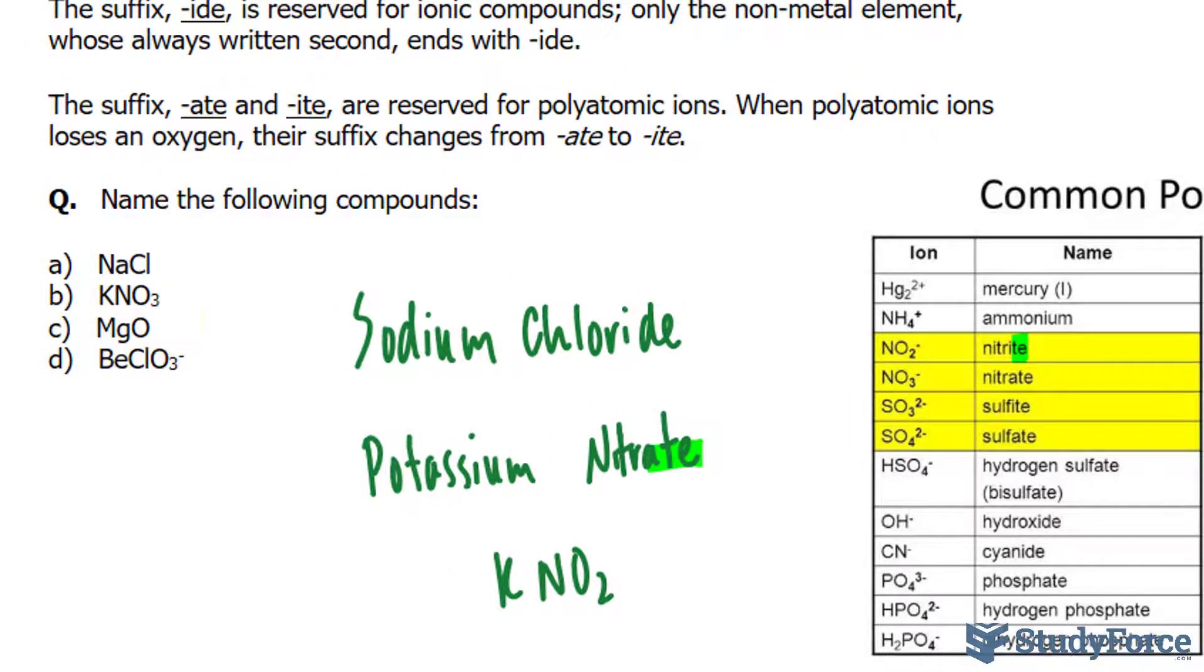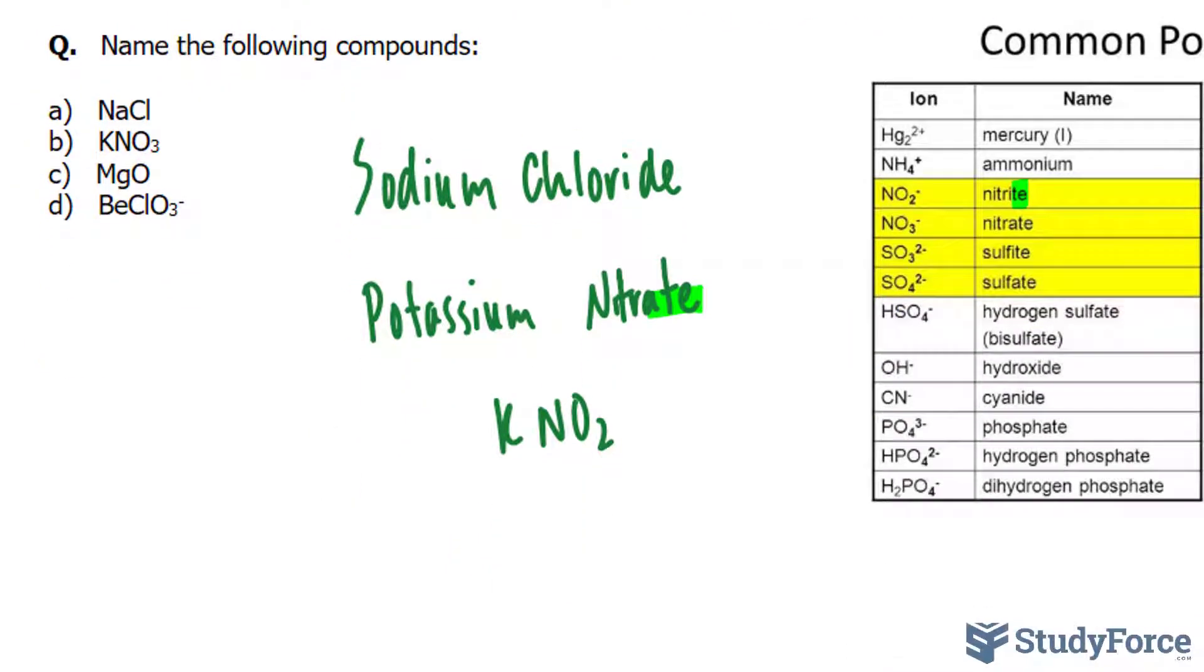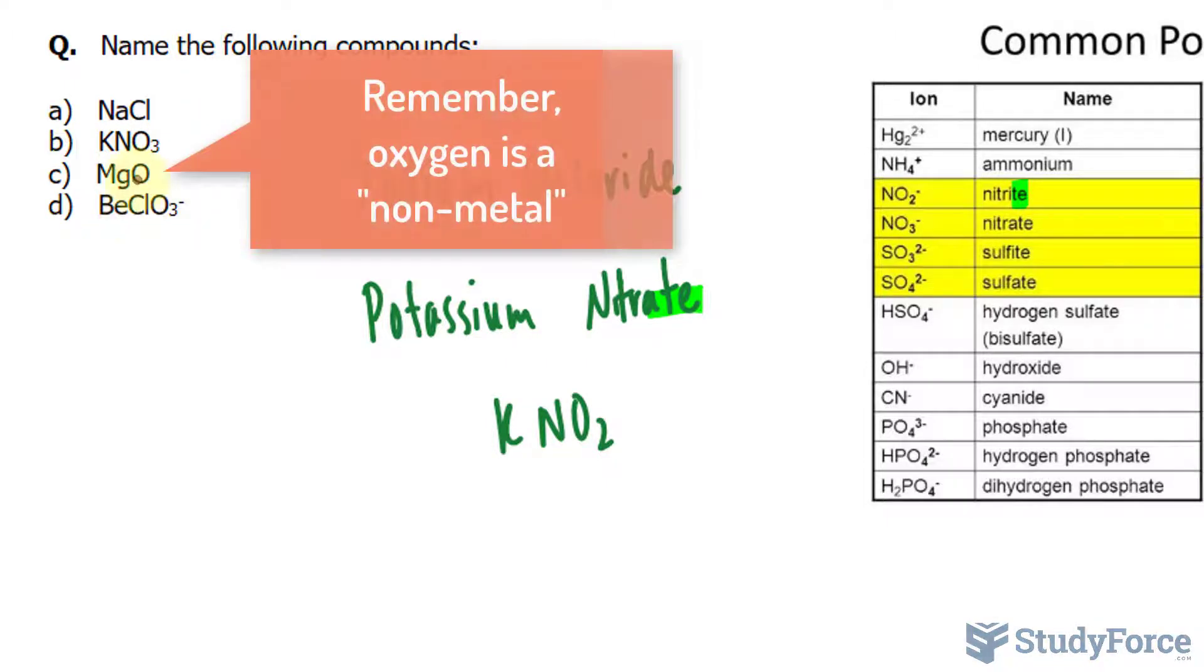In the next example, example C, we have MgO. Mg is the metal, it's magnesium, and O represents oxygen. Neither of these are polyatomic ions. As you can tell, they're not even in this polyatomic chart. They're elements.